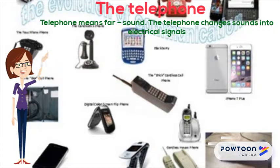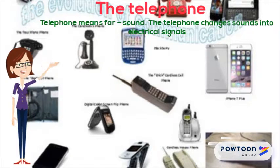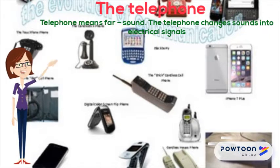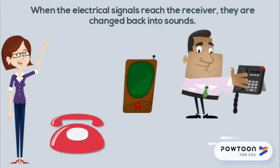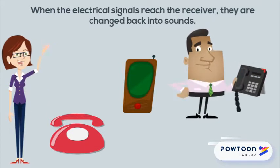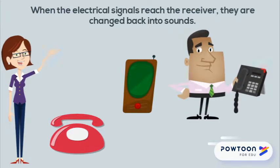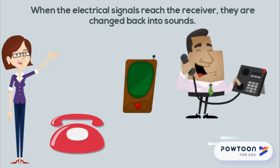At about the same time as the telegraph, the telephone was invented. Telephone means far sound. The telephone changes sound into electrical signals. The signals travel along the wires or cables to the receiver. When the electrical signals reach the receiver, they are changed back into sound.